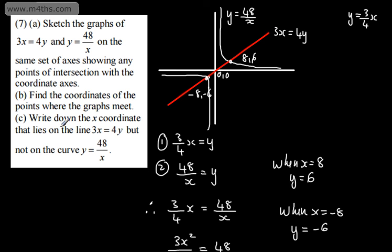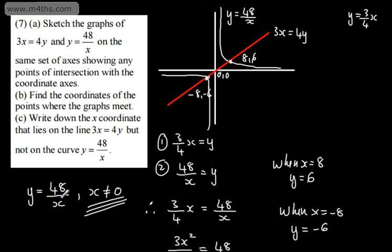In part c, we need to write down the x-coordinate that lies on the line 3x equals 4y, but not the curve y equals 48 over x. So nothing to do with simultaneous equations necessarily, but hopefully we should know that y equals 48 over x is defined for all values other than x equals 0, because division by 0 is undefined. Therefore the x-coordinate that will lie on the line but not on the curve is x equals 0. So just an additional bit — as you would get with some exam style questions, they do lots of different things and then there may be an additional part. Two questions looking at simultaneous equations.